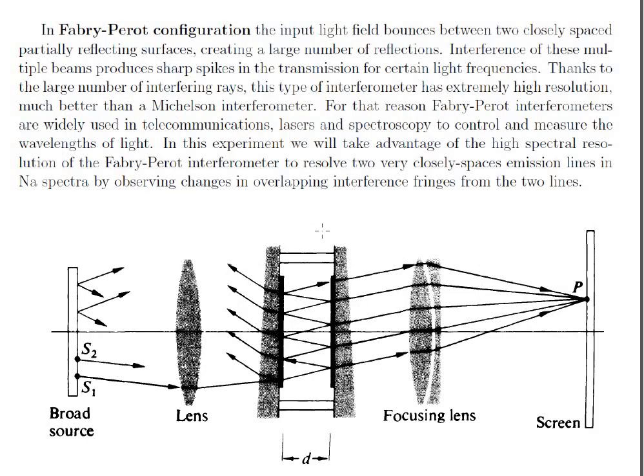The aim of this experiment is not to measure the distance between the two mirrors — sometimes students might get confused. What we will do is put the mirrors at certain distances, and then using the observations, we try to find: number one, the average wavelength of the sodium light, and number two, the separation between the doublet lines. This is the aim of our experiment.